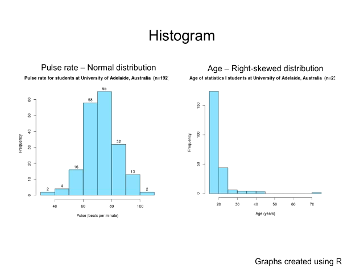Betty is surprised that pulse rate is so symmetric — but lots of measurements on human beings turn out to be normal distributions. Repeated measures of any sort of physical quality will tend to be normally distributed. Looking at the age histogram: this is the age of statistics one students at the University of Adelaide. The intervals are five years. If this were the ages of a random sample of all people from Australia, we probably wouldn't see this distribution — we might see a uniform distribution. But these are students in a statistics one course.